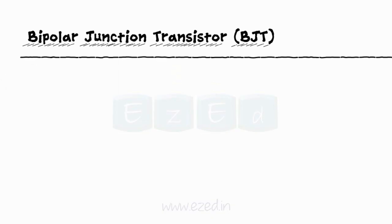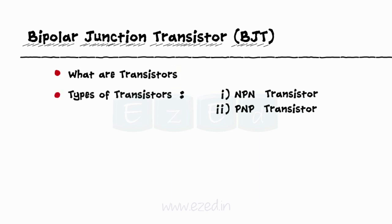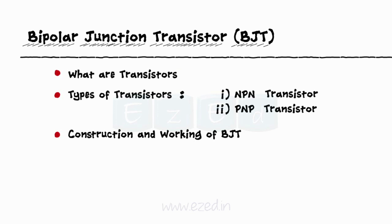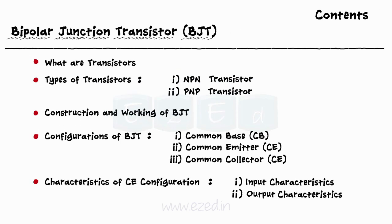In this EasyEd video lecture, we are going to study about what transistors are, types of transistors, NPN and PNP structure of bipolar junction transistors, construction and working of BJT, configurations of BJT, input-output characteristics of BJT, and BJT as an amplifier.